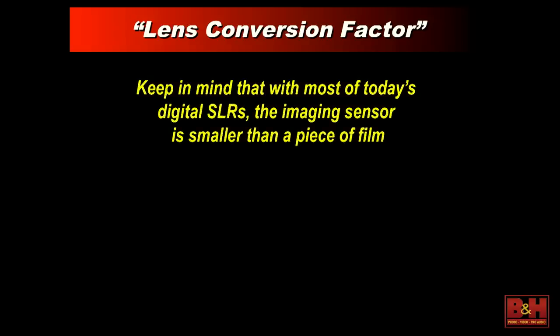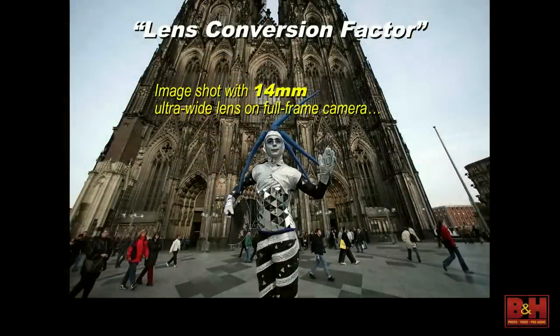Many of us today are shooting with cameras that don't have a full frame sensor. For Canon shooters, if you're shooting with any version of a digital Rebel, a mid-range camera like a 50D, 60D, or 70D, or any version of the 7D, you're dealing with a smaller imaging sensor — what we call an APS-C size sensor. That has an effect on the lens categories and what lenses are going to do. We have this thing called a lens conversion factor, which takes that sensor size into account.